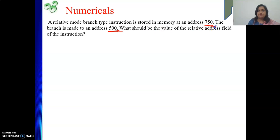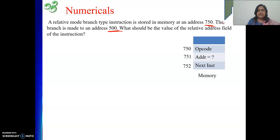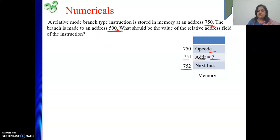The instruction is at 750. In one word the whole instruction cannot be accommodated because the first part holds the opcode and the second part holds the address field — that is the offset. So at 750 you get the opcode, and at 751 the address field holds the value of offset or displacement. The address of the next instruction is 752. My effective address, which is the target of my branch, is 500.